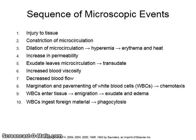The microscopic sequence of events during inflammation begins with injury to tissue, followed by constriction of microcirculation, then dilation of microcirculation resulting in hyperemia, erythema, and heat, and then an increase in permeability.